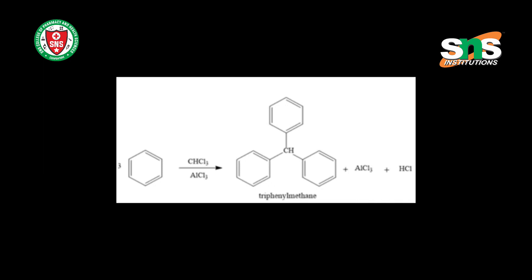Next is the synthesis of tri-phenyl methane. Three molecules of benzene react with chloroform in the presence of aluminium chloride as a catalyst to give tri-phenyl methane, with the elimination of hydrochloric acid.